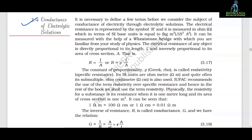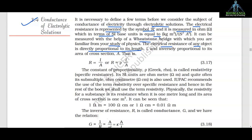3.4 Conductance of electrolytic solutions. It is necessary to define a few terms before we consider the subject of conductance of electricity through electrolytic solutions. The electrical resistance is represented by the symbol R and is measured in ohm, which in SI units is kg·m²·s⁻²·A⁻². It can be measured with the help of a Wheatstone bridge. The electrical resistance of any object is directly proportional to its length L and inversely proportional to its area of cross section A: R = ρL/A. The constant of proportionality ρ is called resistivity or specific resistance, with SI unit ohm·meter.